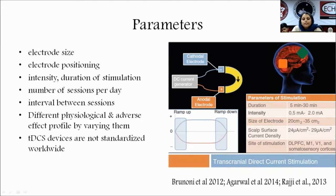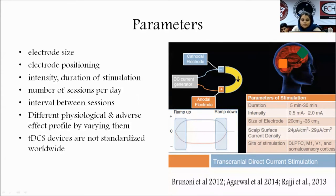Commonly used stimulation parameters: duration will be 5 to 30 minutes, intensity 0.5 to 2 mA, size of electrode usually 20 to 35 cm², scalp surface current density 24 to 29 µA per cm². Site of stimulation varies depending on the clinical situation — usually dorsolateral prefrontal cortex, motor cortex, visual cortex, or somatosensory cortex.